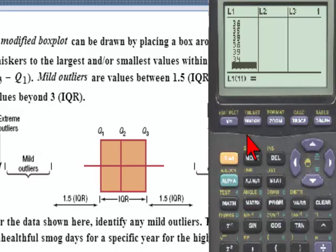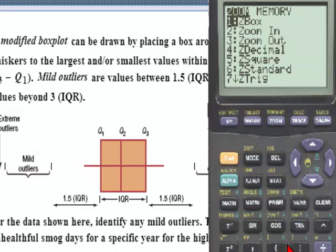To show you what an outlier would look like on the modified box plot, we'll put a number into this list which is very different from the numbers that are already in the list. We'll just put in the number 100. When we go through the steps again and hit zoom 9,